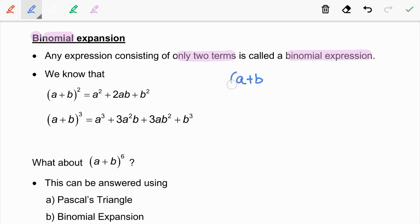If we take (a+b) to the power of 0, this is going to be equal to 1. If we take (a+b) to the power of 1, this is going to be equal to a+b.